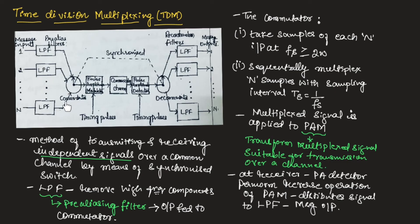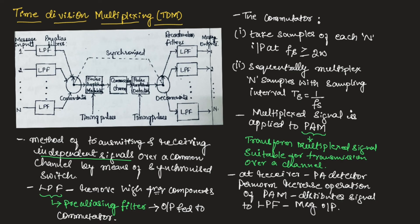In summary, n input signals are first applied to the pre-aliasing low pass filter to remove high frequency components. These signals are then fed to the commutator, which samples each signal at Fs ≥ 2W. The commutator output goes to the pulse amplitude modulator, which transforms the multiplexed signal for channel transmission. At the receiver, the pulse amplitude detector demodulates the signal and distributes it to the appropriate low pass filter to produce the output message. The decommutator operates in synchronization with the commutator.